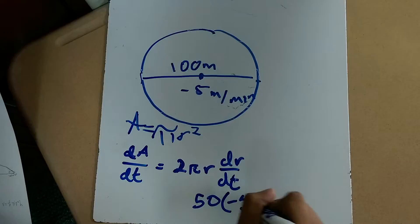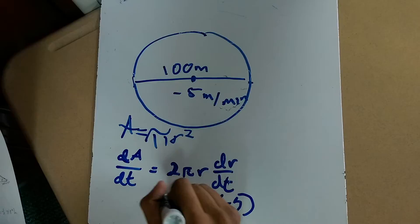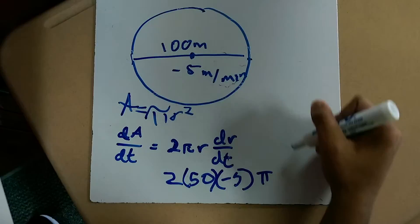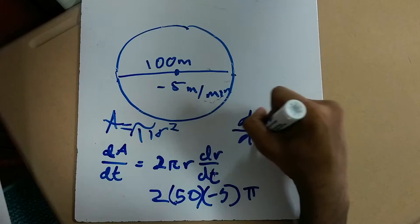And since you're multiplied by 2 and pi, the answer will end up being dA/dt is equal to negative 500π.